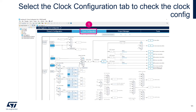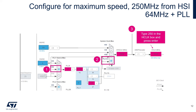Next step is to configure the clocks of the STM32H5. Go to the clock configuration section. This permits configuring the clock source and the speed at which the STM32H5 operates. We will run from the HSI — the high-speed internal clock running at 64 MHz — and select PLL mode to reach the maximum frequency of 250 MHz. Select HSI, select PLL clock, then enter 250 for HClock (the system clock) and press Enter. That will configure the clock tree automatically.